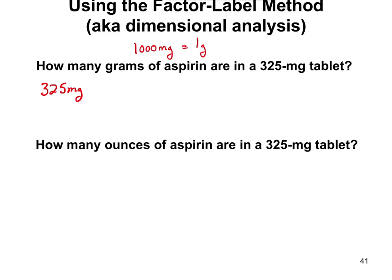That's the equality. To use it as a conversion factor, we multiply — milligrams goes on the bottom and grams goes on the top, so grams is in the numerator and milligrams is in the denominator. That way, we can cross off milligrams with milligrams. Now we need to write the numbers: 1,000 milligrams per 1 gram. We cross off milligrams, which leaves us with grams.